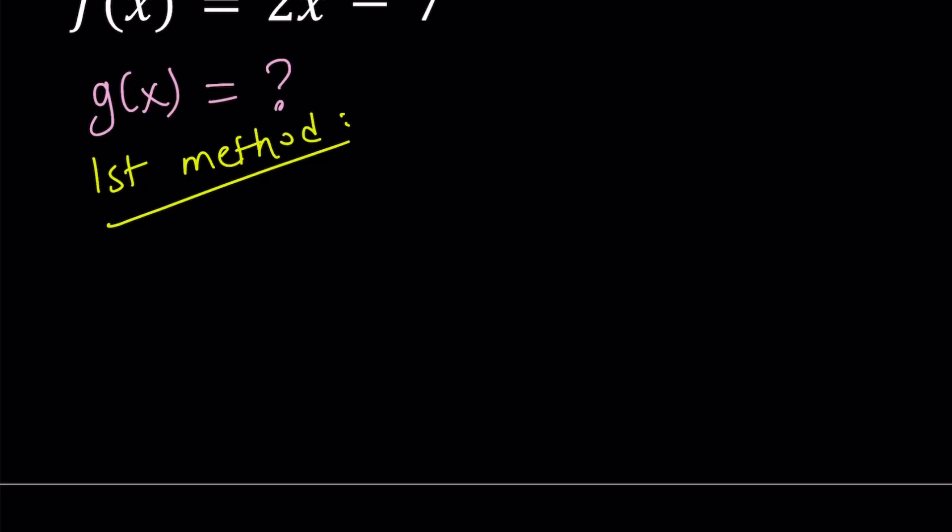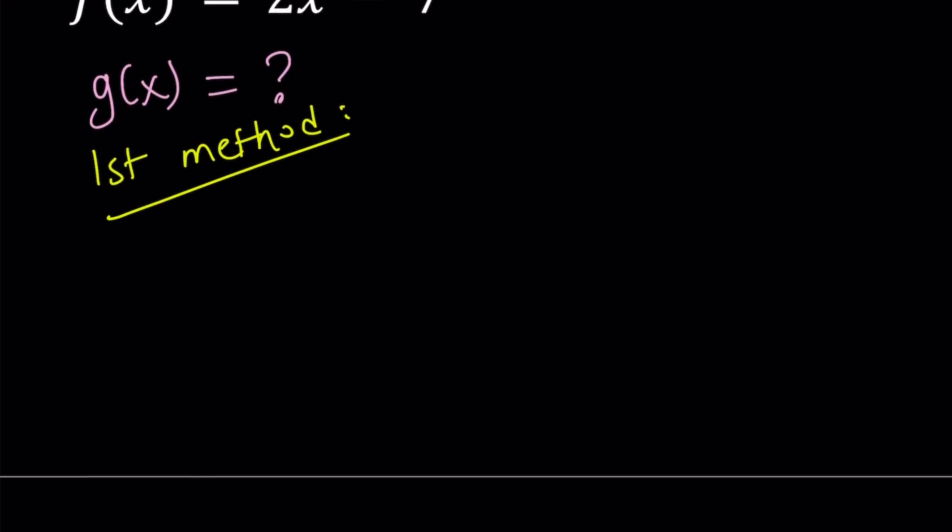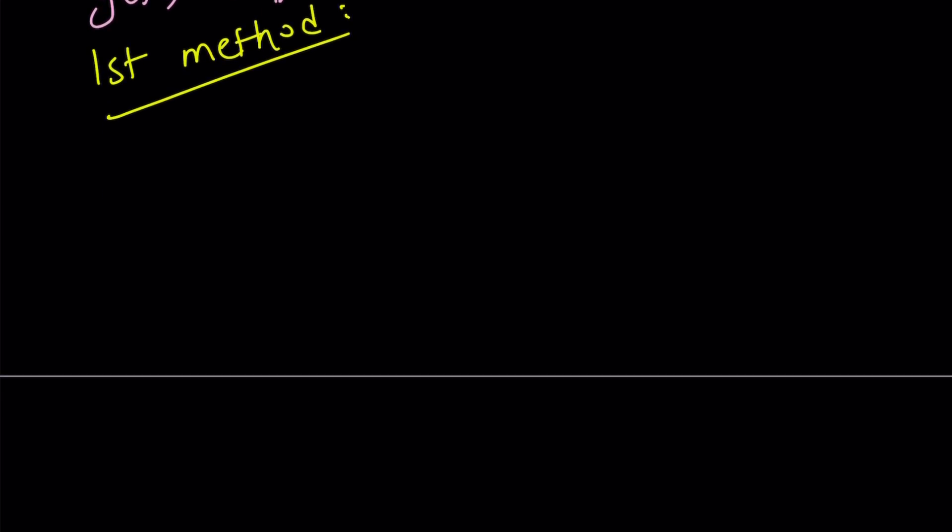My first method basically involves writing f of g of x to make it look like f of x. So what do I mean by that? Let me clarify. So f of g of x, you know the composition of f and g, is given as 4x squared minus 2x plus 1. So I'm going to manipulate this expression.